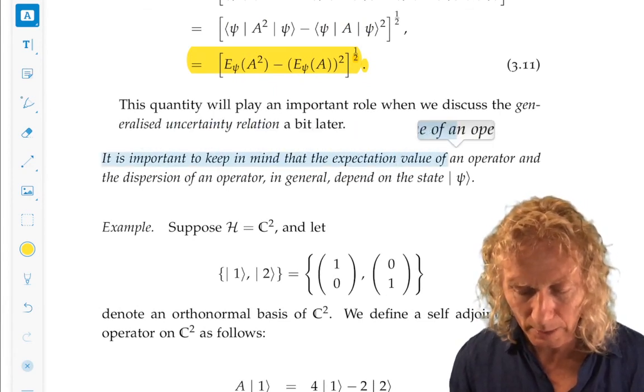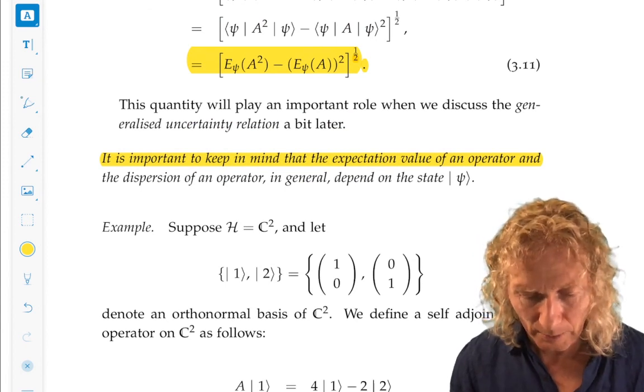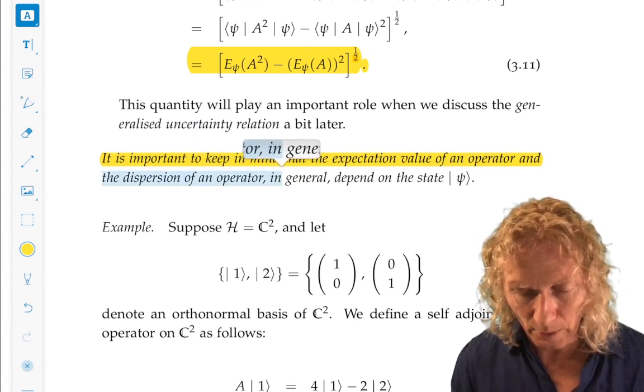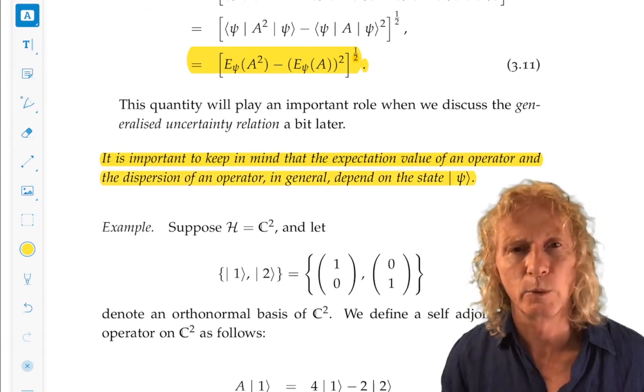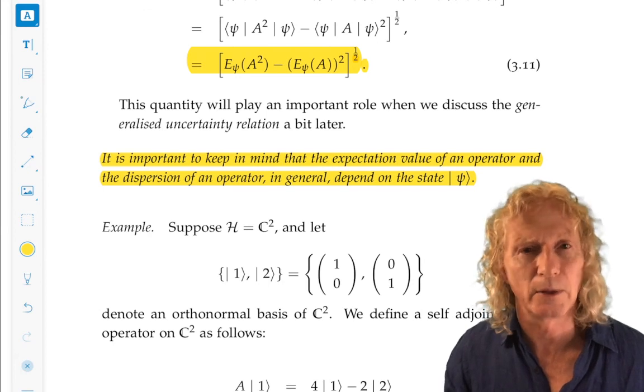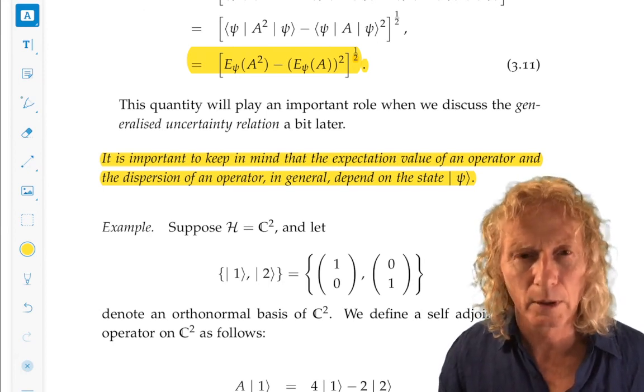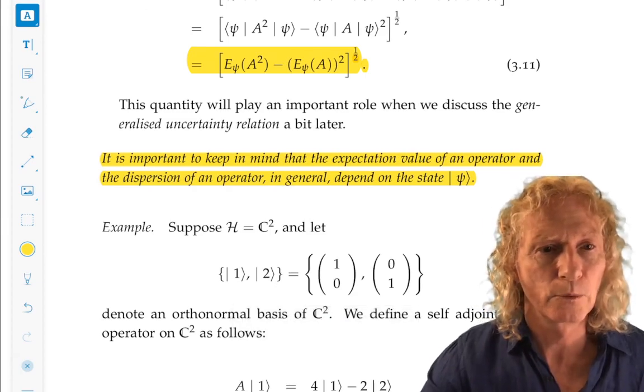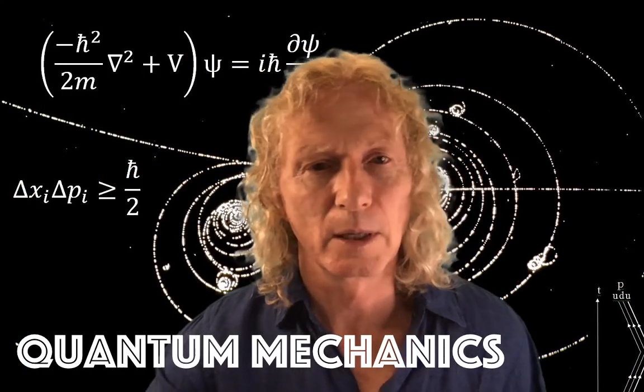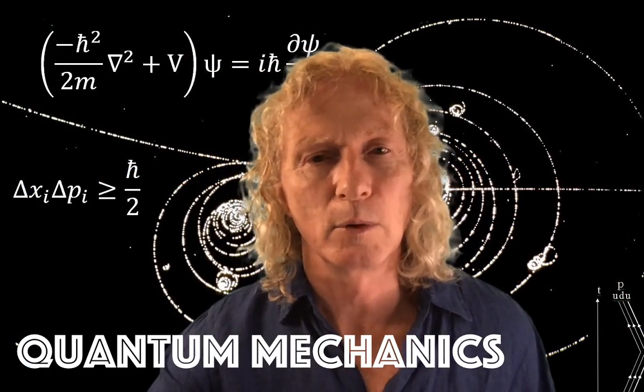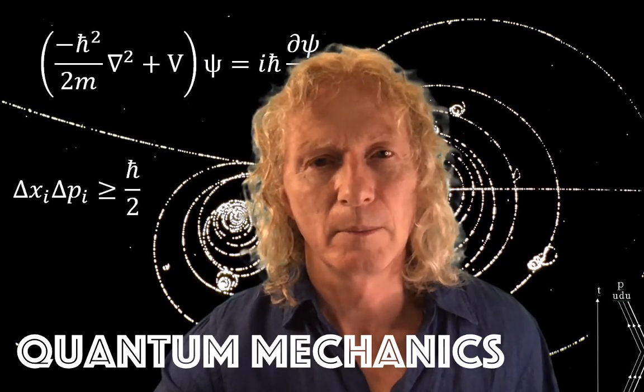It's important to keep in mind that the expectation value of an operator, and the dispersion of the operator, in general, depends on the state in which the measurement is made, ket psi. That's a good place to stop for today. Come back next time, look at another example that has a bit more detail in it. See you next time.